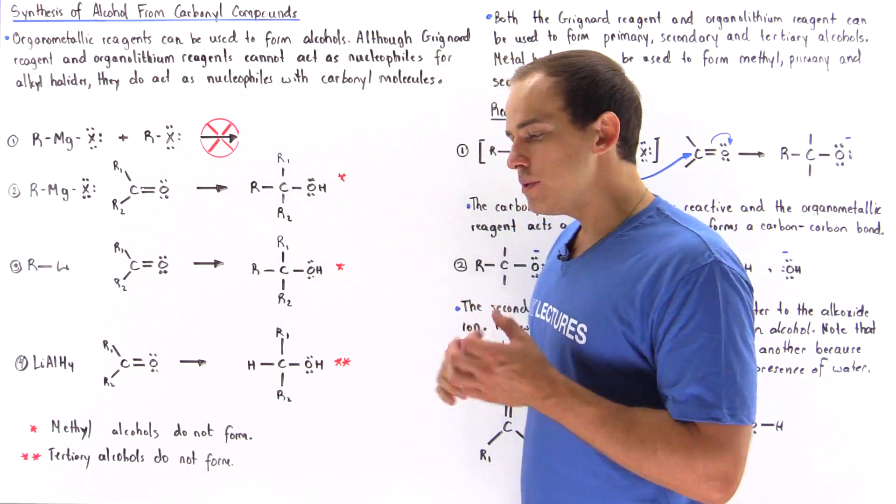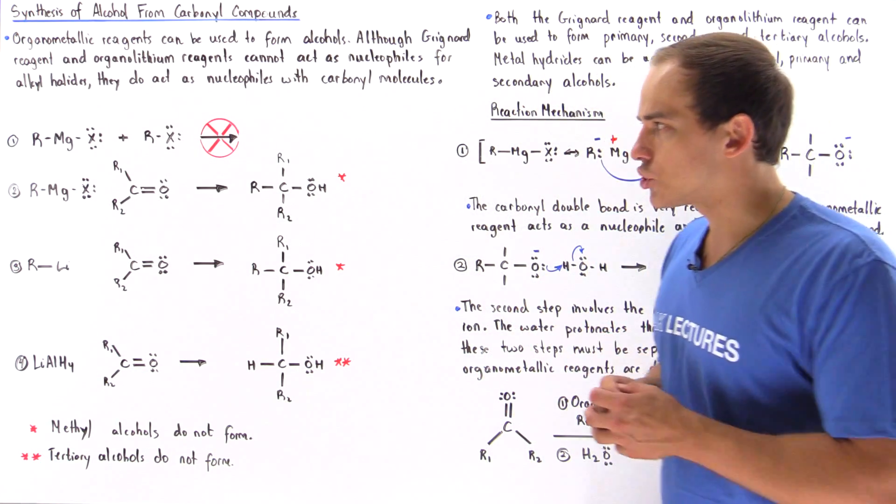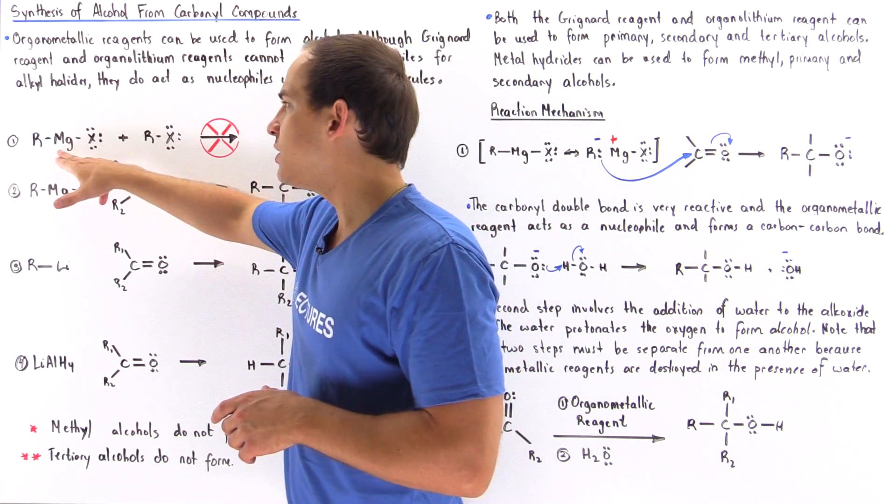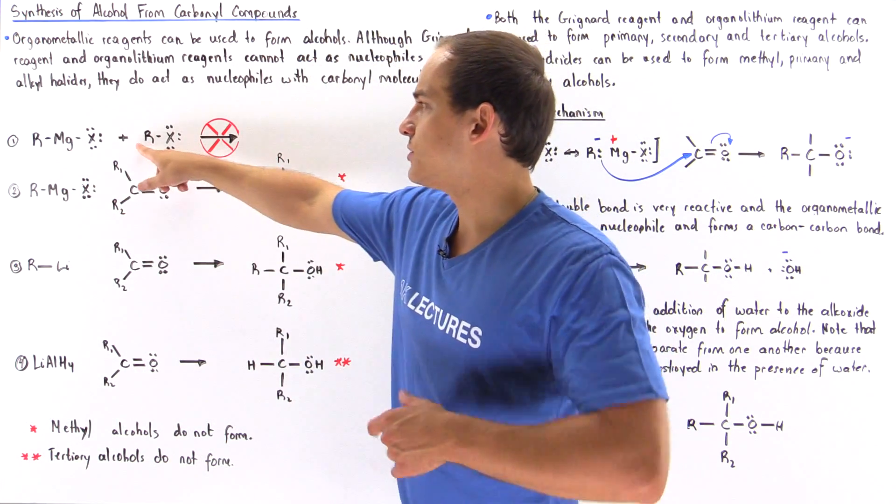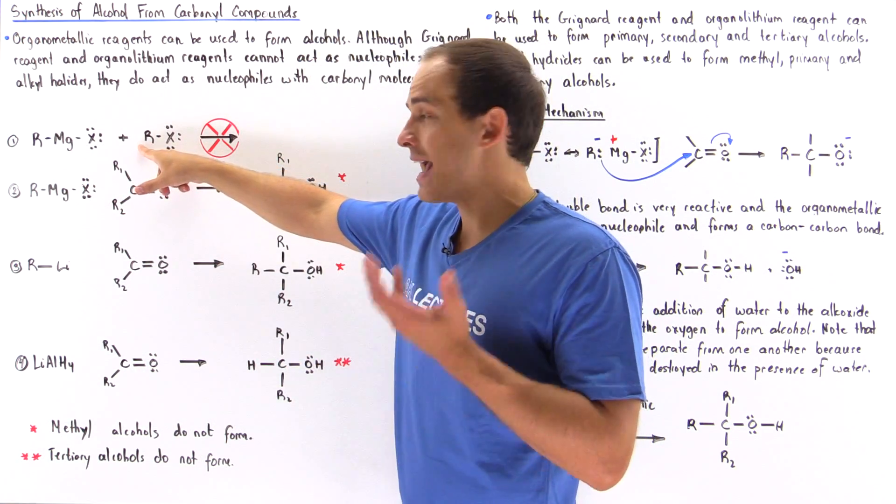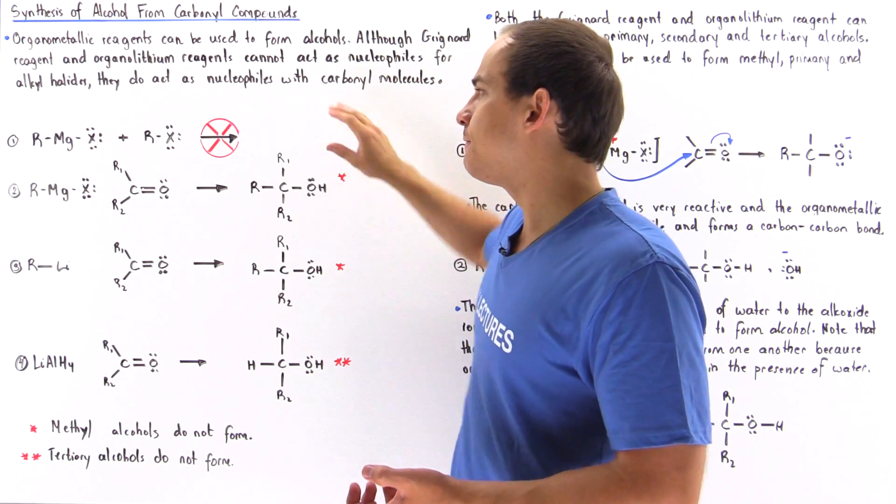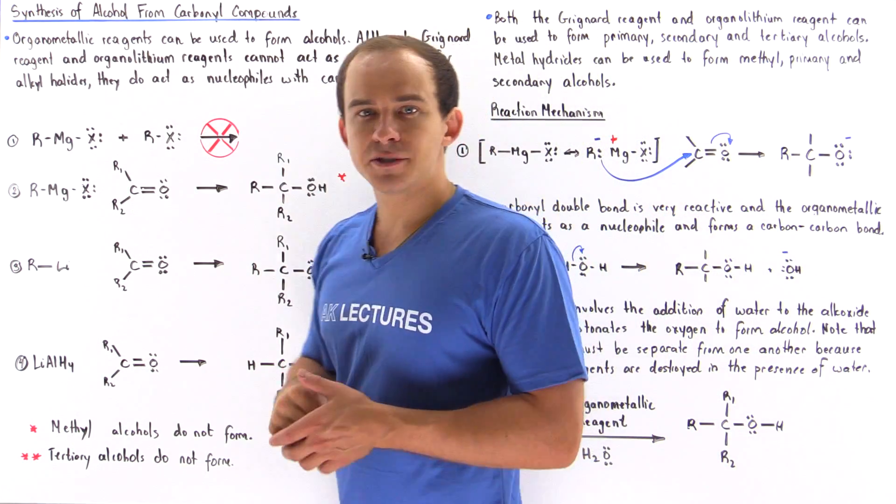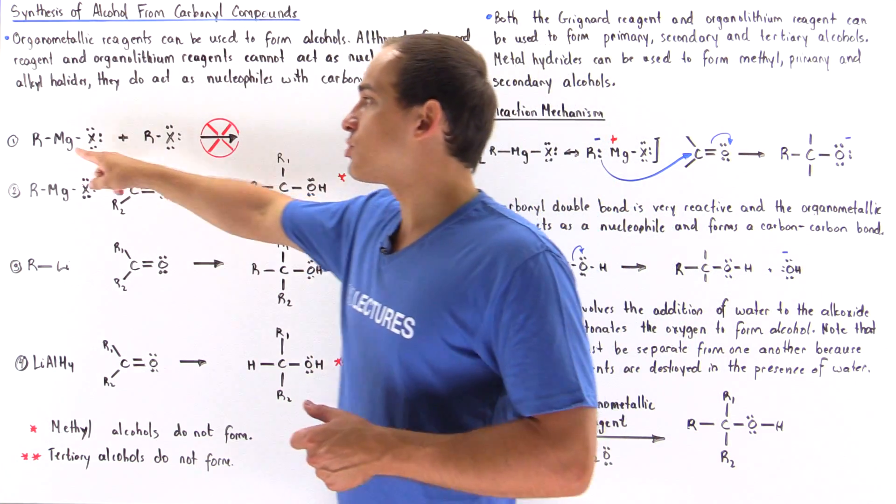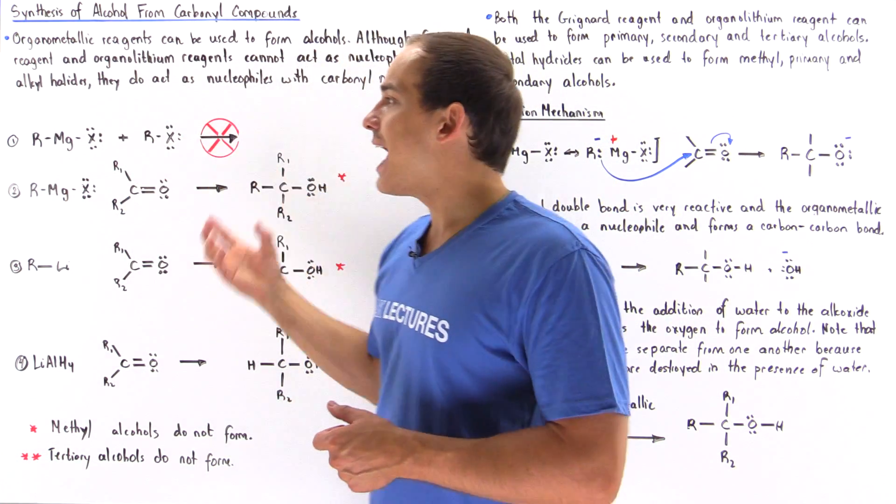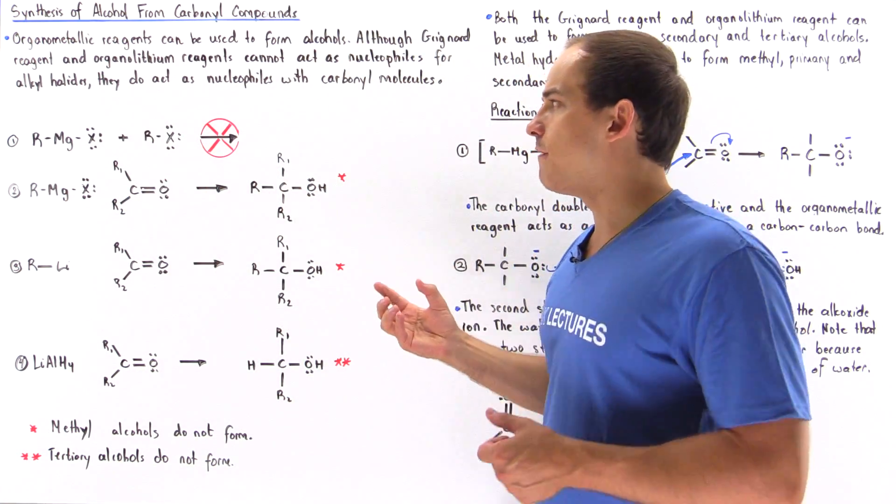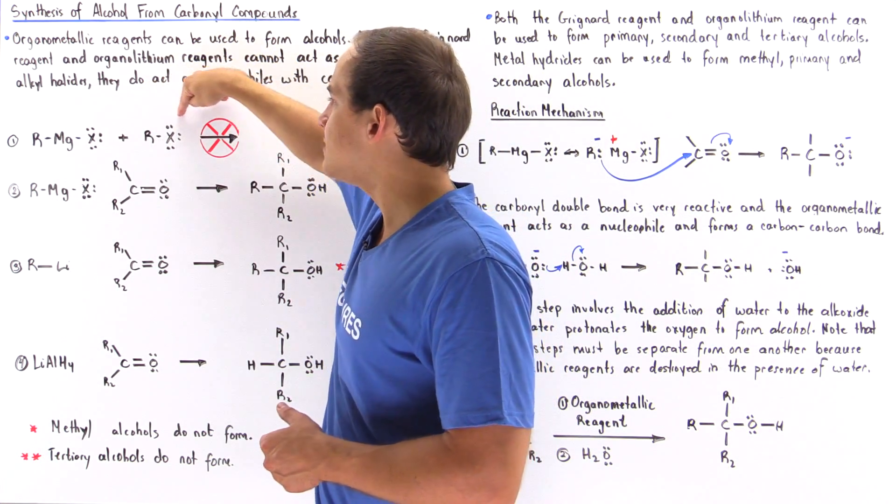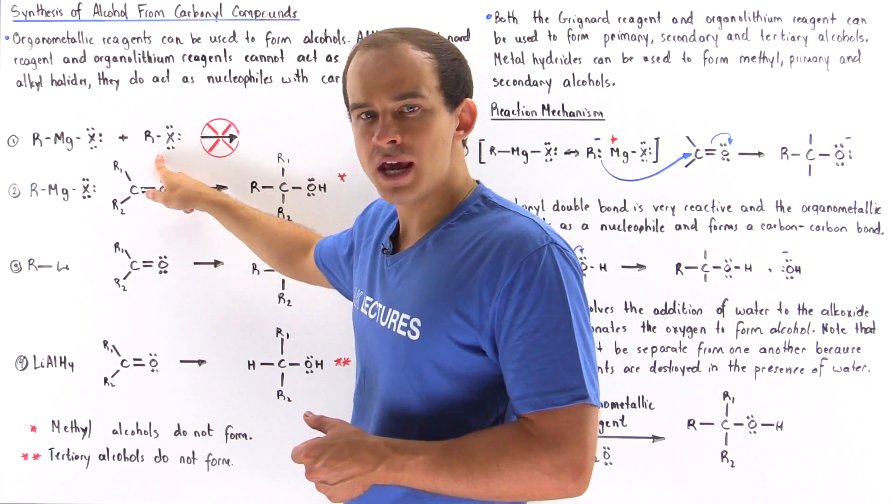Now notice, as we mentioned in the previous lecture, when we mix our organometallic reagents such as the Grignard reagent in the presence of our organic halide, we do not form any product. So no reaction actually takes place. And this is because this Grignard reagent is not a good enough nucleophile to attack this carbon on the R group, displacing this leaving group here.